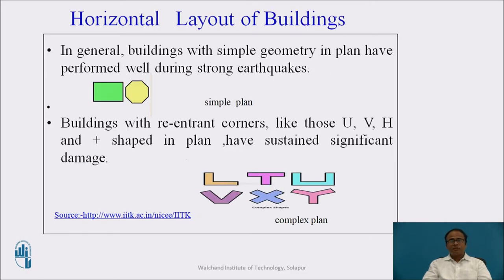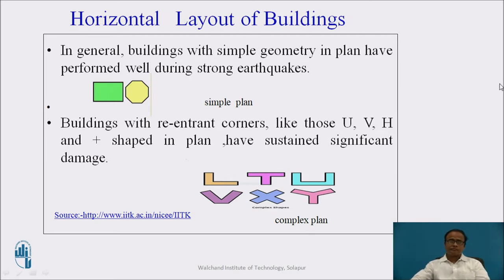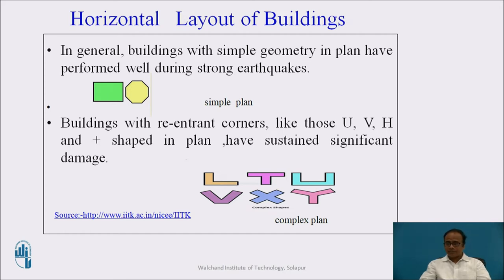Now let us consider the horizontal layout of buildings. In general, buildings with simple geometry in plan have performed well during strong earthquakes — you can see the figure of rectangular plan and octagonal plan. Buildings with re-entrant corners like those U, V, H, and plus-sign shaped in plan have sustained significant damage, as shown in the complex plan figure.